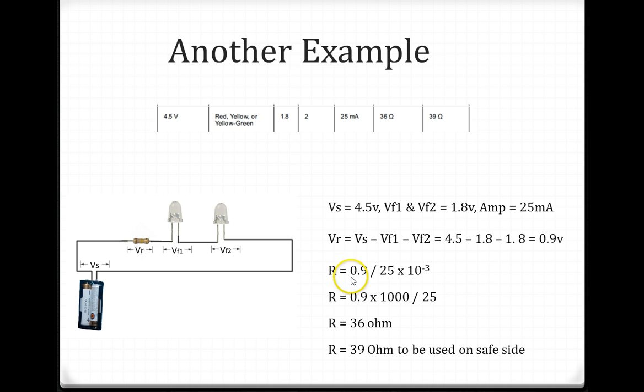Now I know that VR is 0.9V divided by the current, 25mA. That gives me the value of 36 ohms. And to be on the safe side, you want to use 39 ohms.